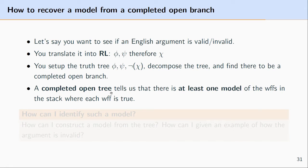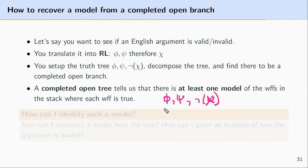If there is a completed open tree — that is, a tree with at least one completed open branch — then we know there is at least one model where all of the well-formed formulas in the stack are true. That is, we would know that this formula, and this formula, and this formula are all true. And if that's the case, then it's possible for the premises to be true and the negation of the conclusion to be true, which is just another way of saying it's possible for the premises to be true and the conclusion to be false. And if that's the case, then the argument would be invalid.